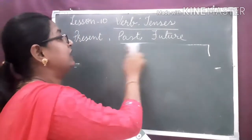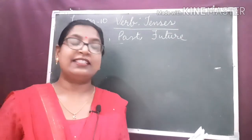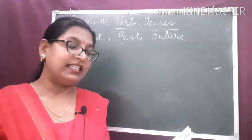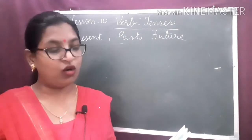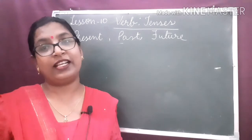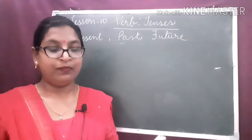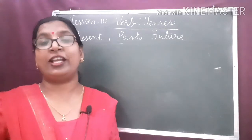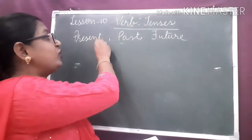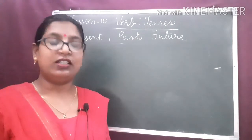The present tense indicates an action that takes place now. Past tense indicates an action that already took place, that has already taken place sometime earlier. Future tense indicates an action that is going to take place later. So there are mainly three tenses: present tense, past tense, and future tense.